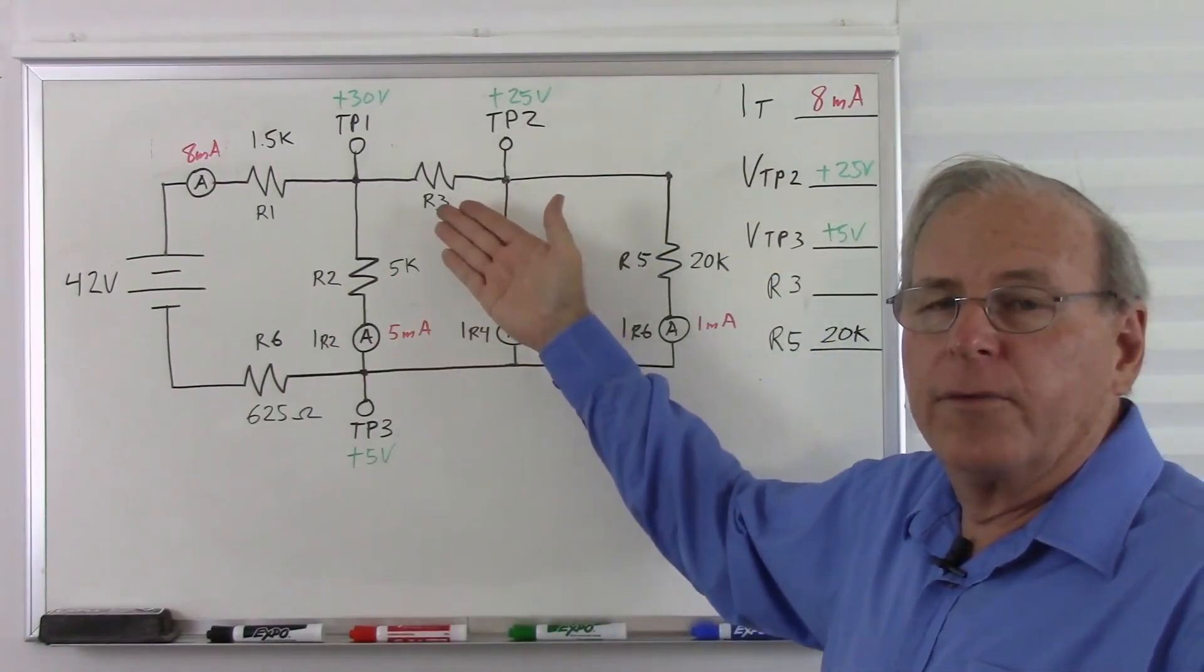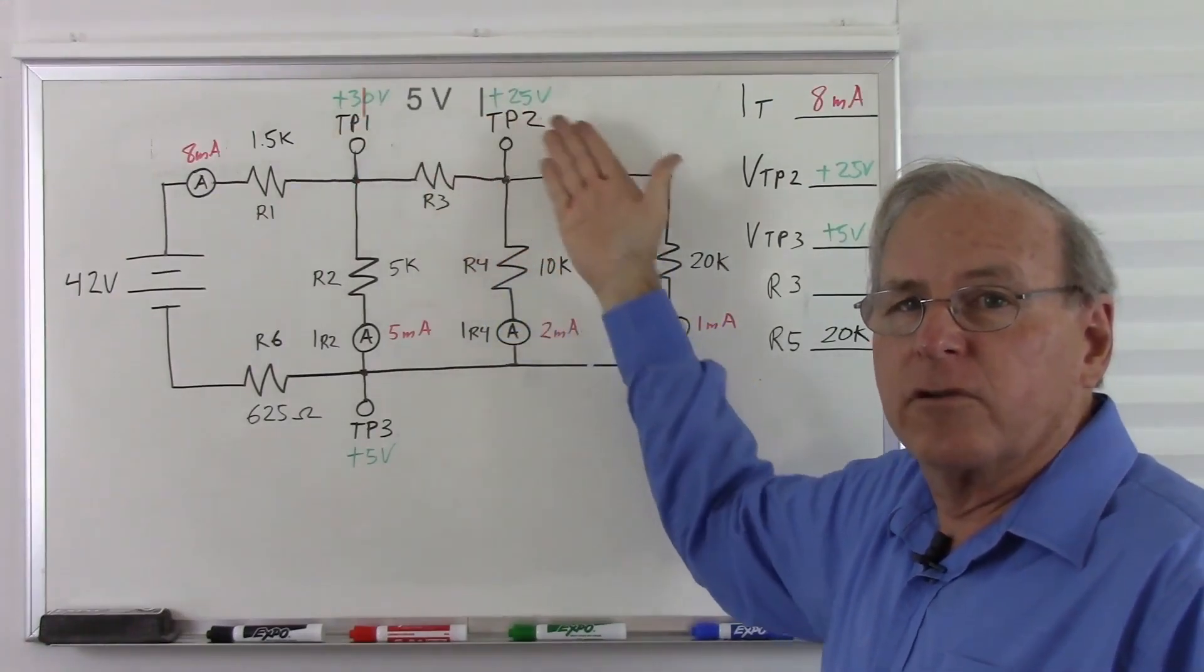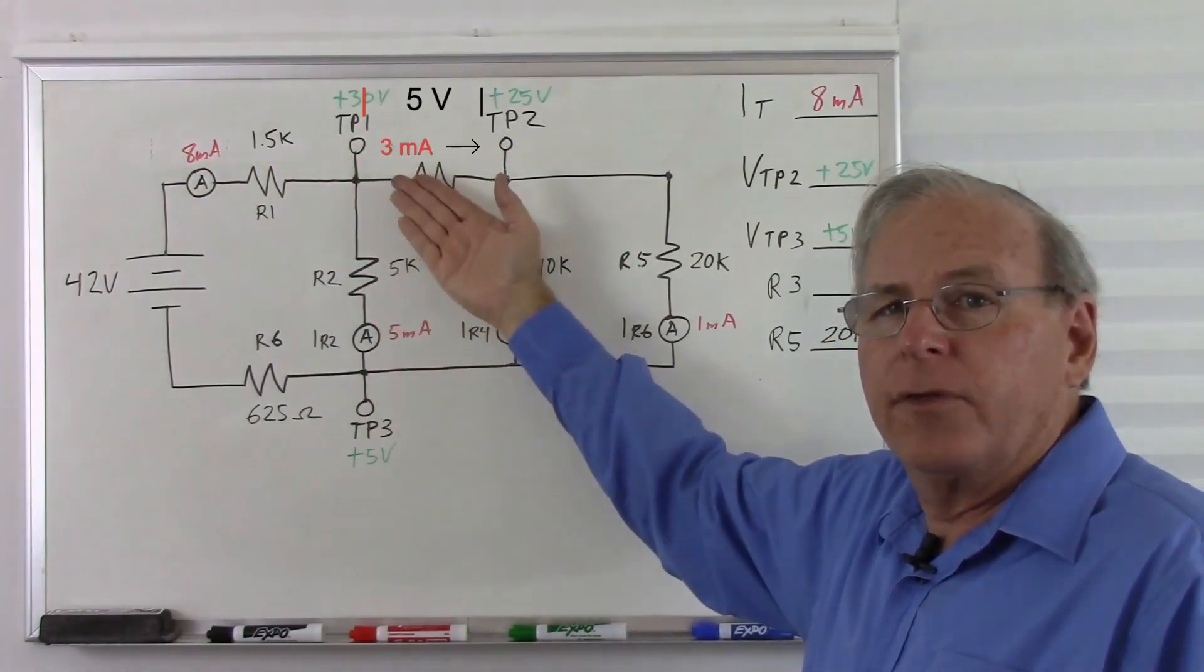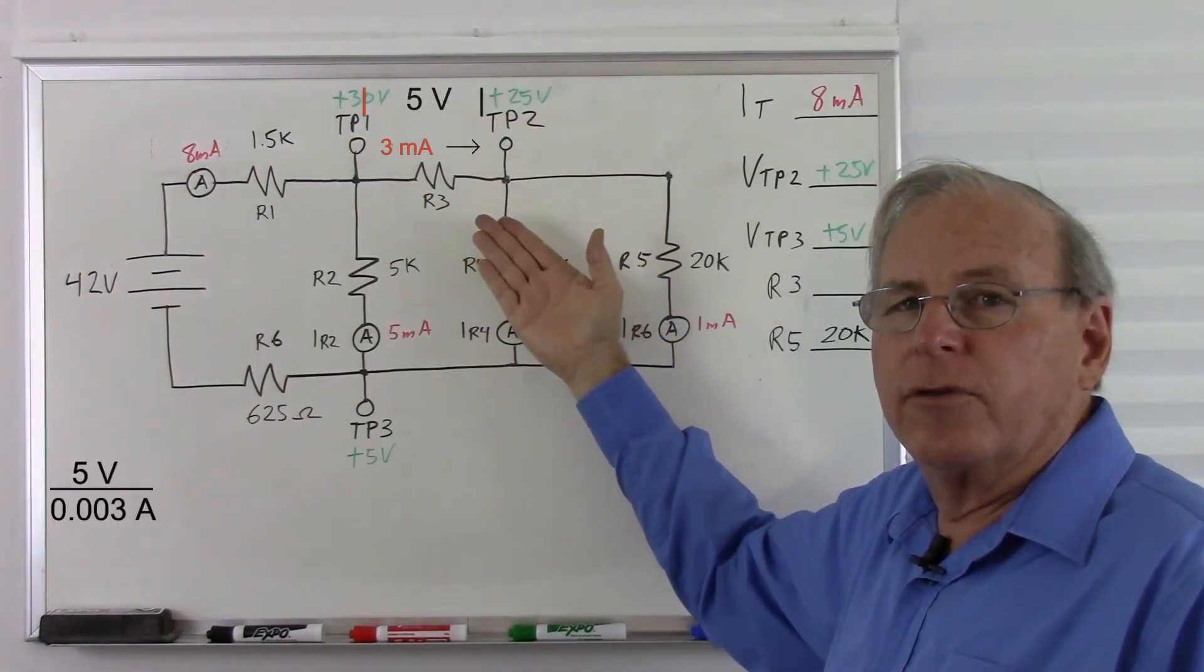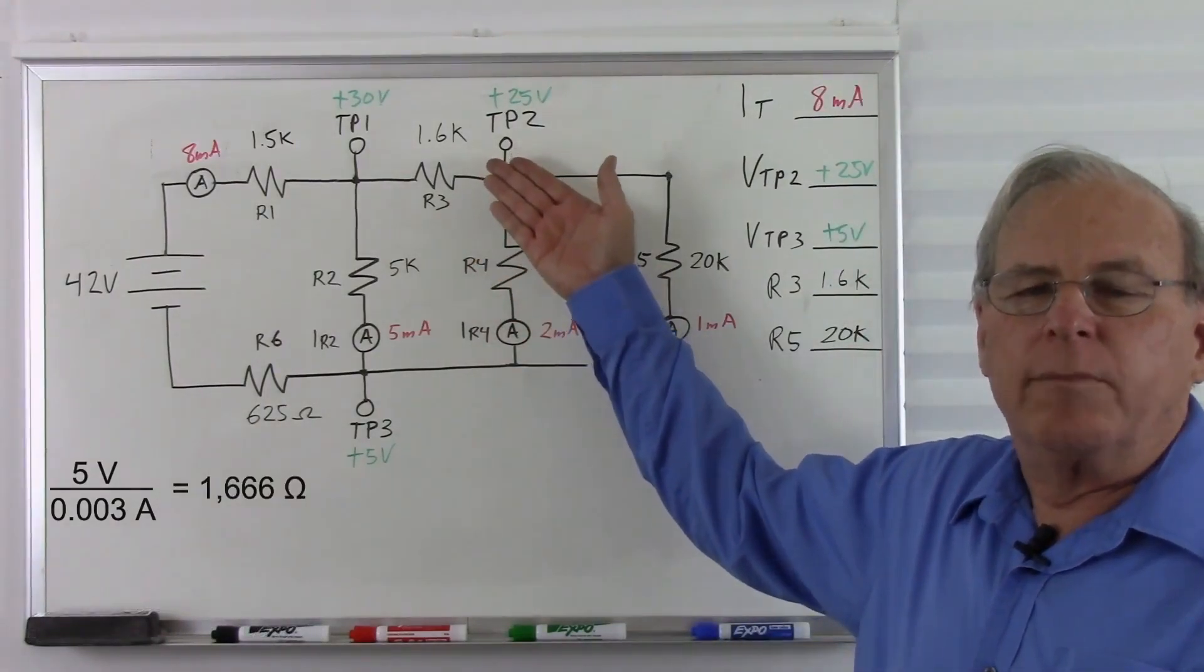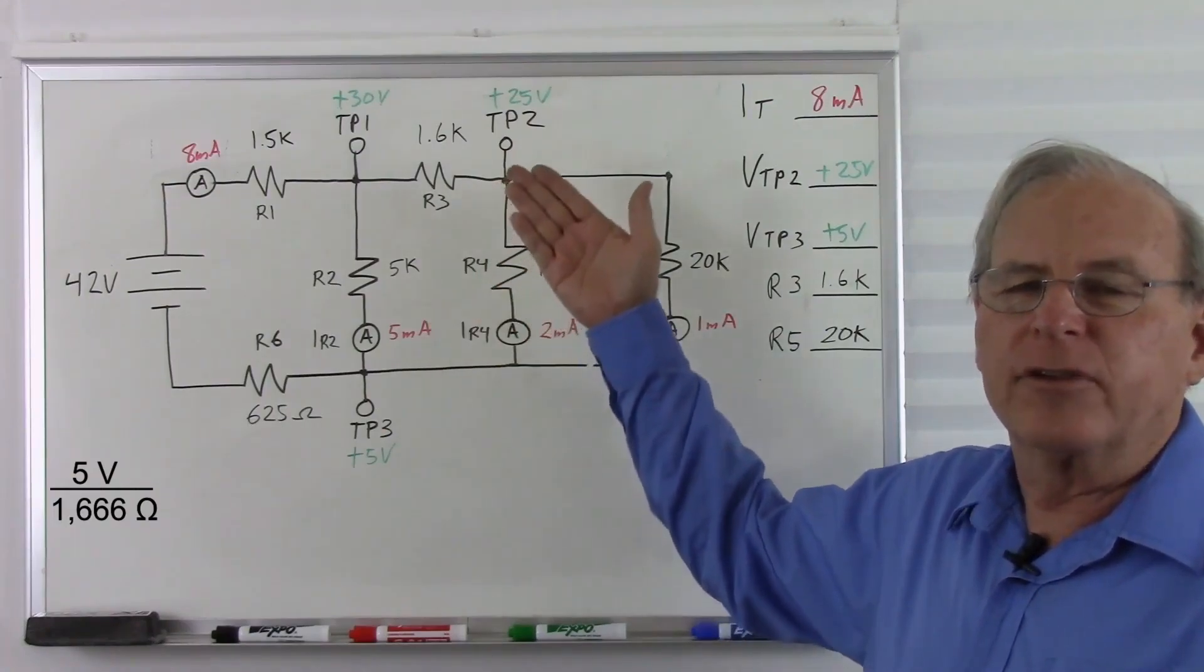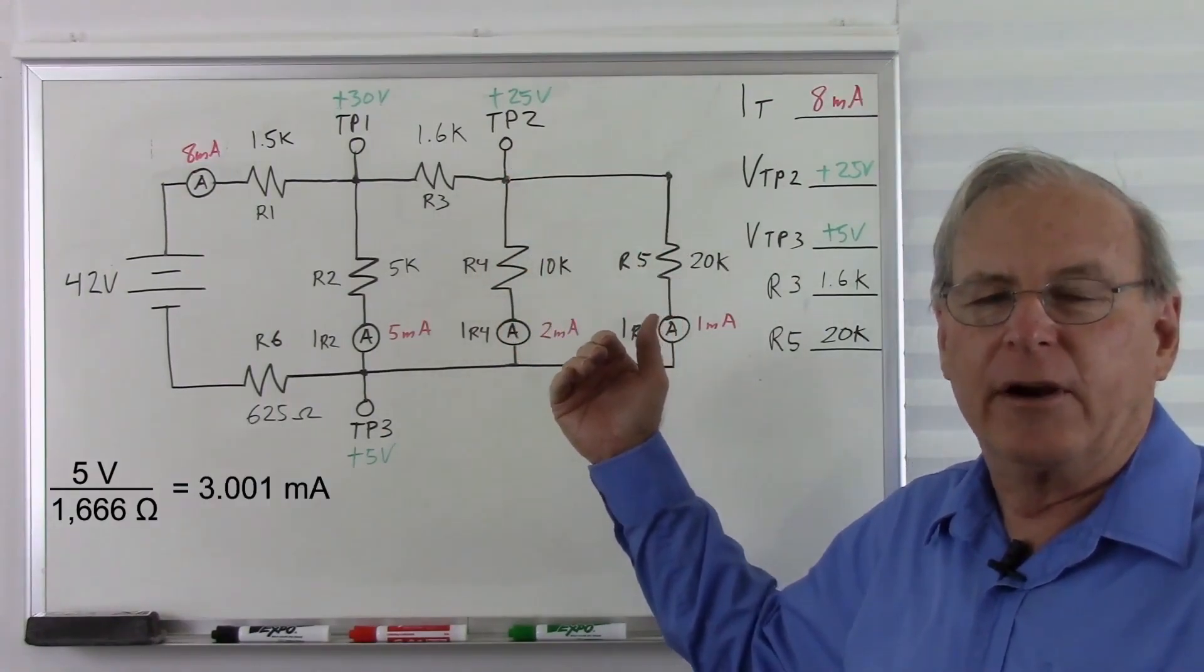So now we can tackle R3. We see that there's 30 volts here and 25 volts here, so there's 5 volts across R3. How much current is flowing through it? Well, we start with 8 milliamps, and 5 milliamps went this way, so 3 milliamps went through R3. So 5 divided by 0.003 gives us 1.666k, which I've rounded to 1.6k. And if we double check this, we have 5 volts divided by 1.666k gives us 3.001 milliamps, which is, accounting for rounding errors, the correct answer.